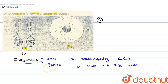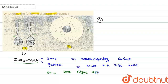So we cannot differentiate whether it is male gametes or female gametes — this condition is called isogamous. The example of isogamous condition is found in some algae and also in fungi. Algae and fungi are the examples of isogamous condition.